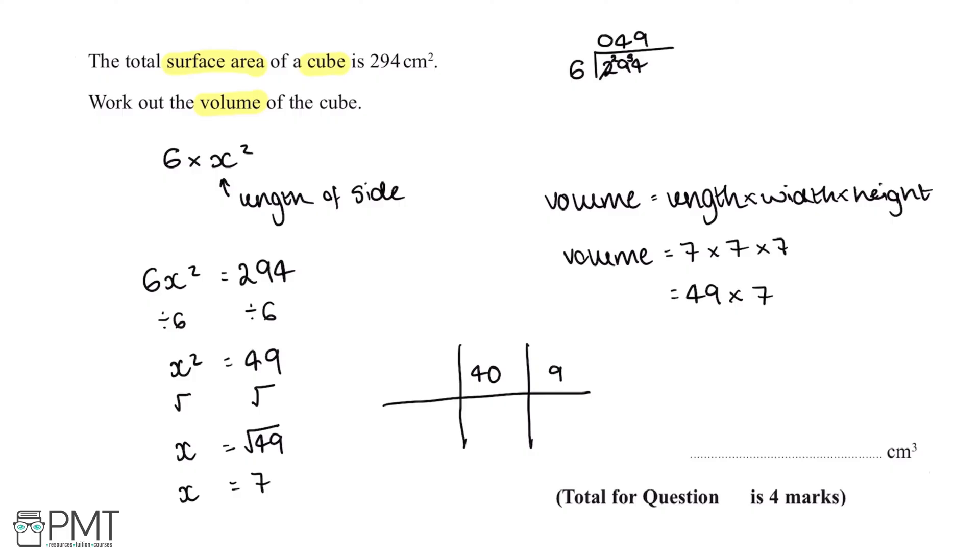49 multiplied by 7. First we'll work out 7 times by 40 which gives us 280, and then 7 times by 9 which gives us 63. Then we'll add 280 to 63.